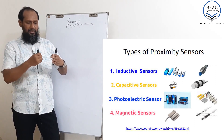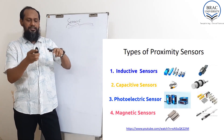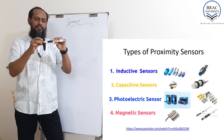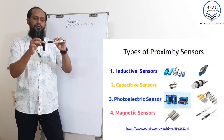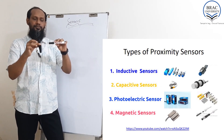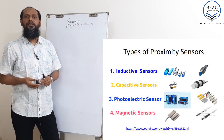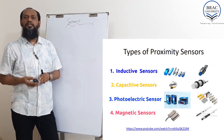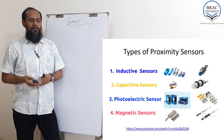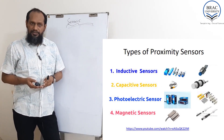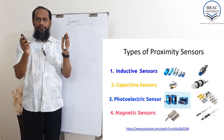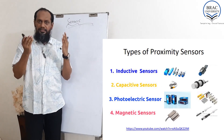Proximity sensor means how close two things are — one thing here and another thing, how close it is. When it is very near or a bit far, there are a number of ways: one is an inductive sensor, another is a capacitive proximity sensor, one is a photoelectronics sensor, and another is a magnetic sensor. All of these measure the closeness of two things.